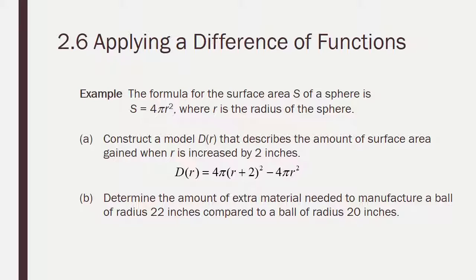Okay, so all we need to do for part A is, in place of r, put r plus 2. So we have d of r equals 4 pi r plus 2 squared, and then minus 4 pi r squared, because it actually asks us to describe the amount of surface area gained when r is increased by 2 inches. So if we just had the 4 pi times r plus 2 squared, that would tell us the new surface area. What we want to know is how much more is there now. So we're going to subtract the original surface area amount. And then what we're going to do is take that formula, and we are going to put in the original surface area, which is 20. The 2 is already accounted for in the problem, so just put in 20. And we get about 1056 extra square inches.